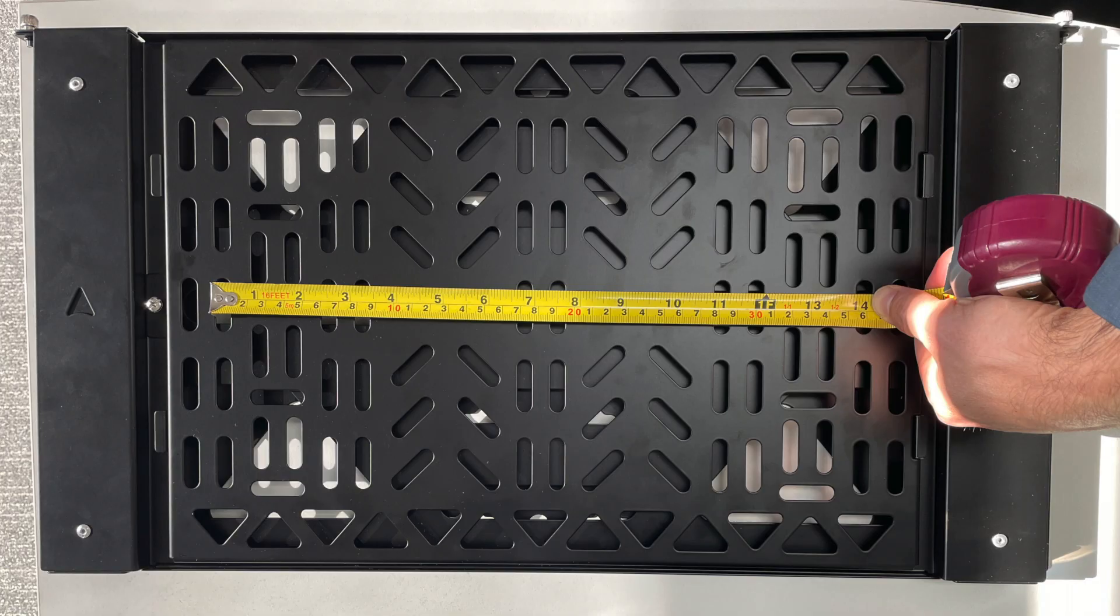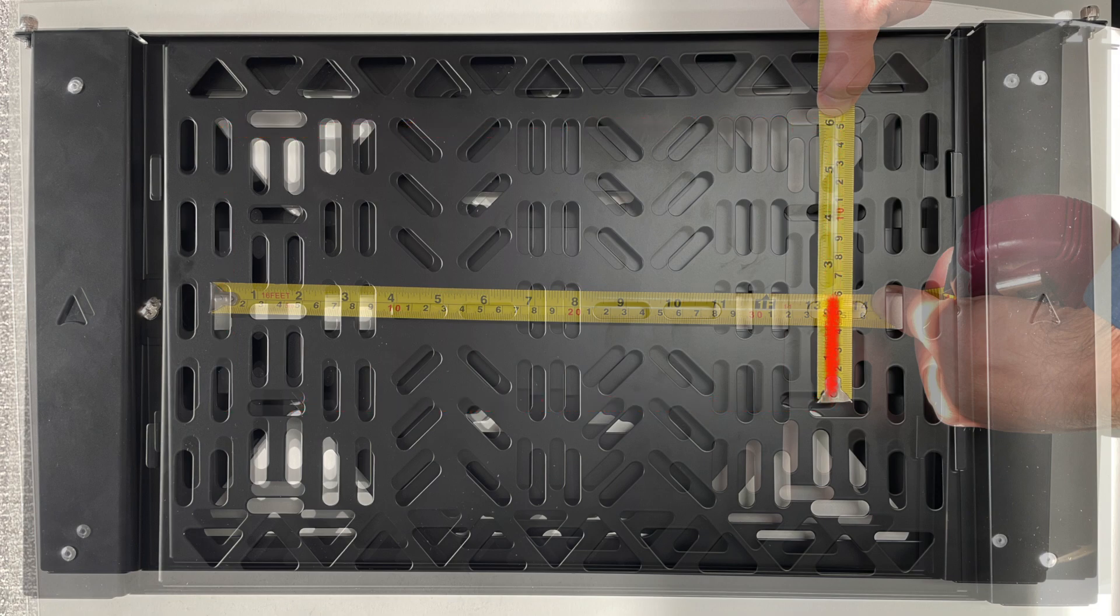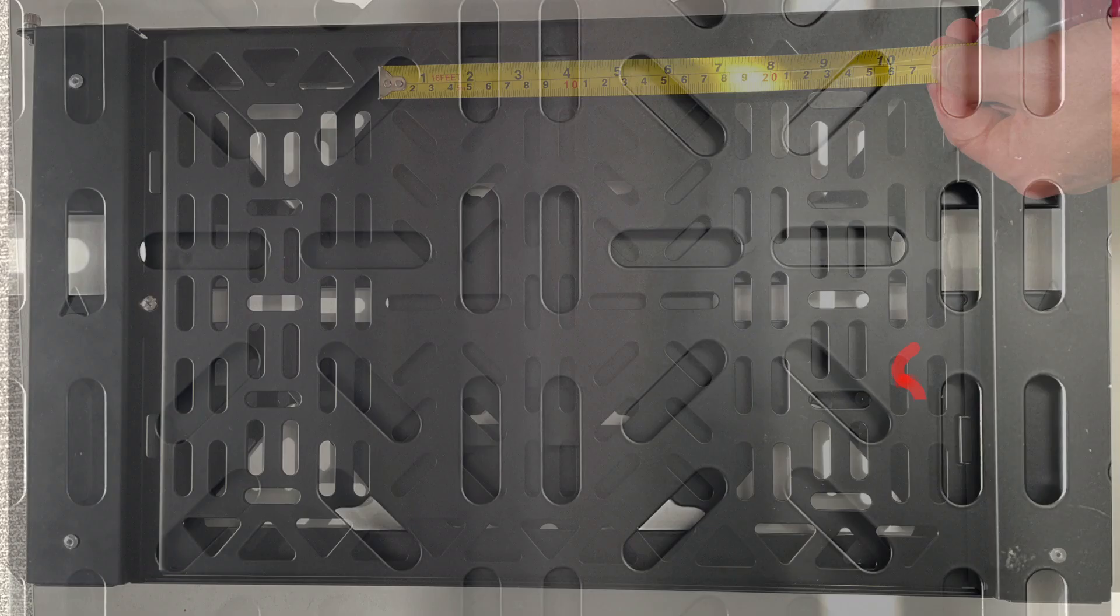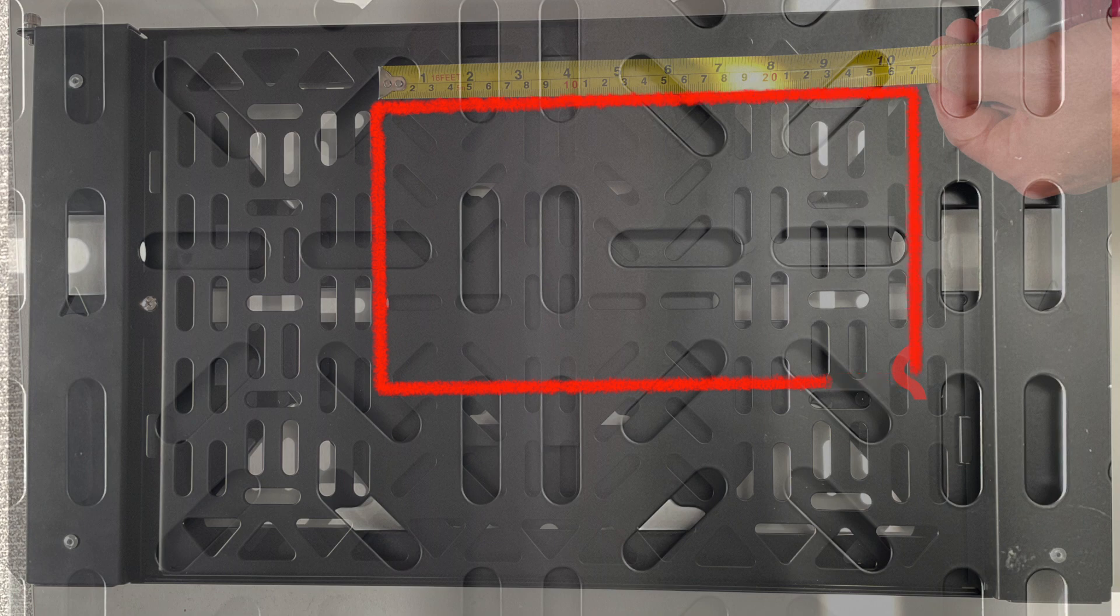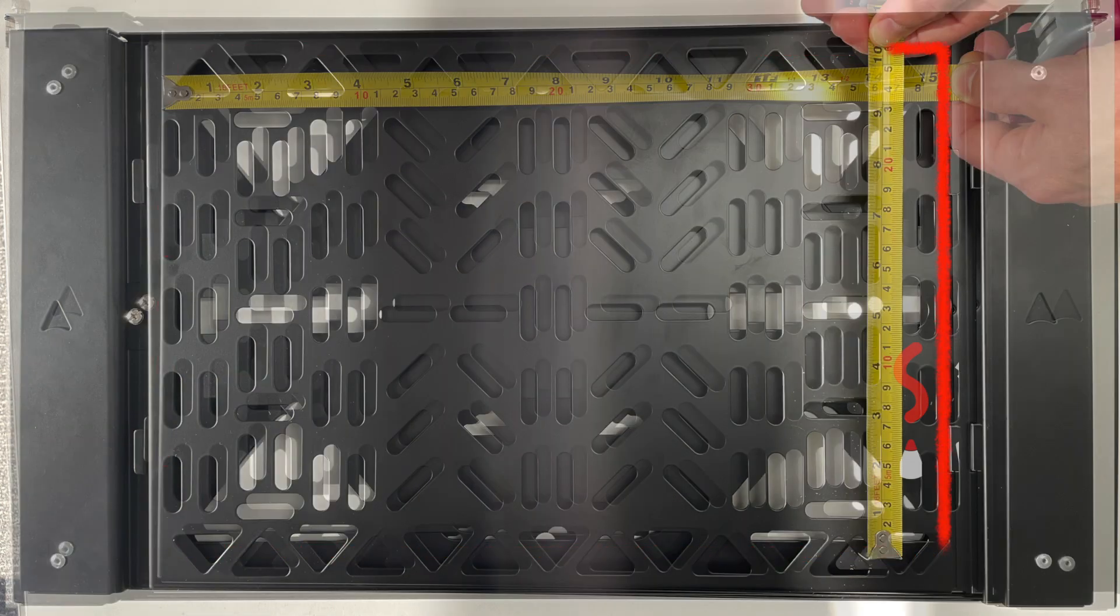A full-size Samsung One Connect box at 350mm by 150mm. The Xbox Series S at 275mm by 151mm. The Sony PS5 Digital Edition 390mm by 260mm.